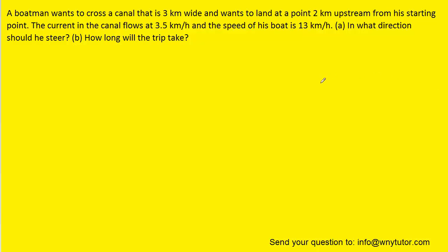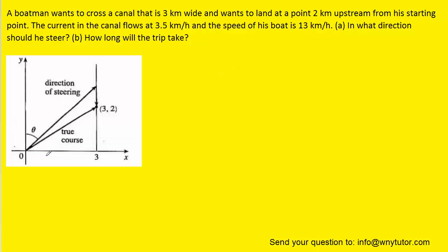What we'll do first is draw a picture that represents the information stated in the question. We've drawn a set of coordinate axes and placed the boatman at his starting position at the origin. The river is 3 feet wide, so we've come over here to 3 and drawn a vertical line. Then traveling up that vertical line, the boatman wants to land 2 kilometers upstream.